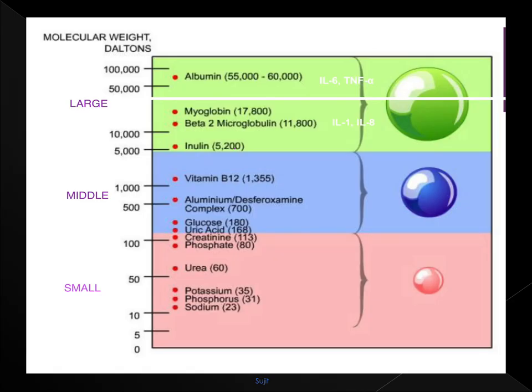We classify clinically important molecules as small molecules with molecular weight less than 150 Daltons, middle molecules with 150 to 5000 Daltons, and large molecules with more than 5000 Daltons. These substances present in excess levels in our body are harmful to us.